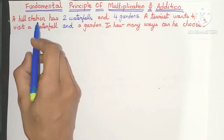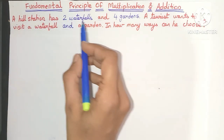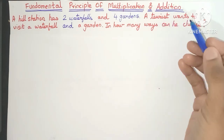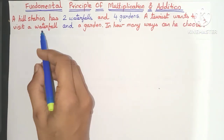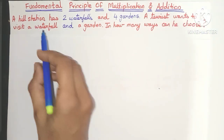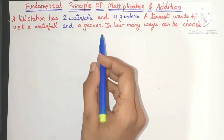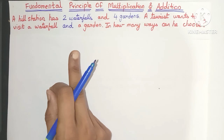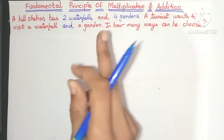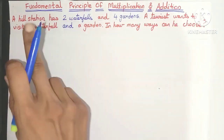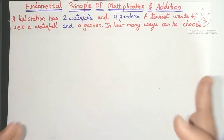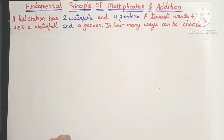A hill station has two waterfalls and four gardens. A tourist wants to visit a waterfall and a garden — note the word 'and' we are using. The tourist wants to visit both the waterfall and the garden. So in how many ways can he choose?